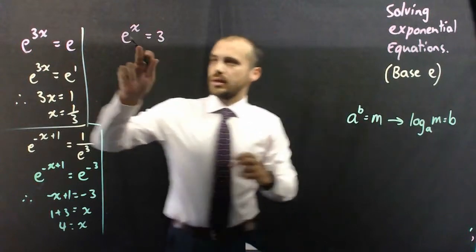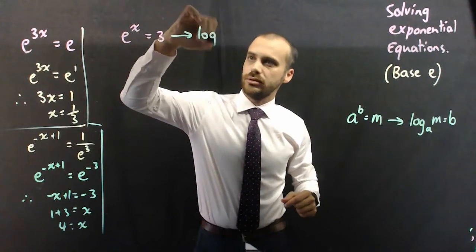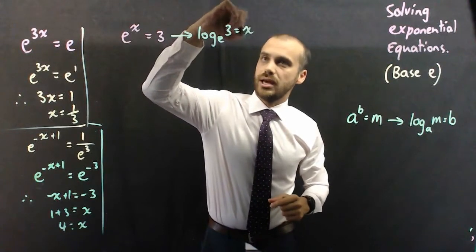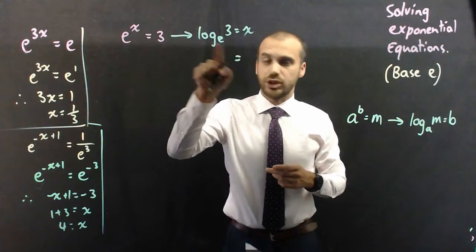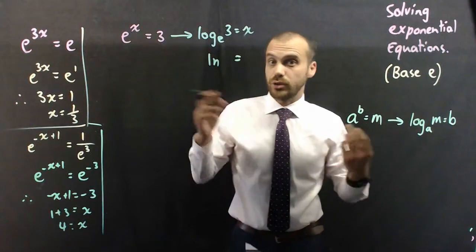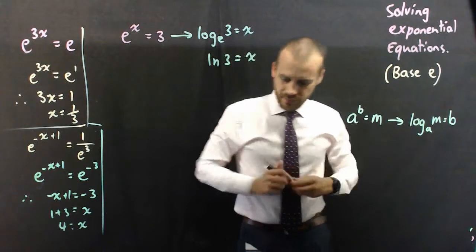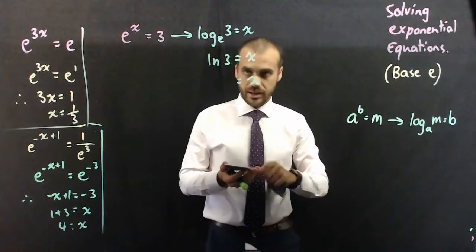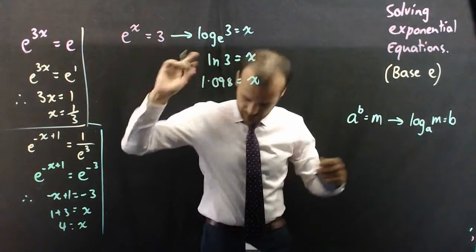So, if I were to write this in logarithmic form, it would be log base e, 3 equals x. Now, another way to write that, this is called natural log. So, another way to write that is ln, log natural. ln3 equals x. Grab your calculator, press the ln button, press the 3, and you'll know what x is. ln3 equals 1.099.